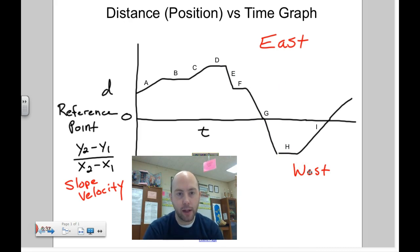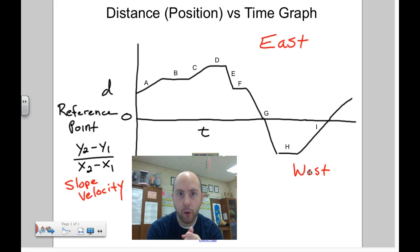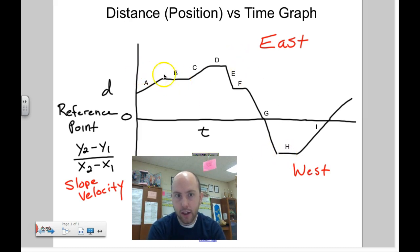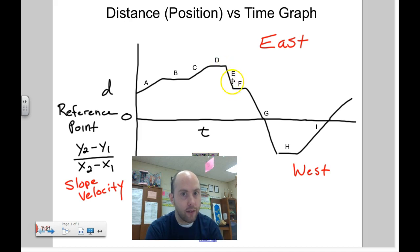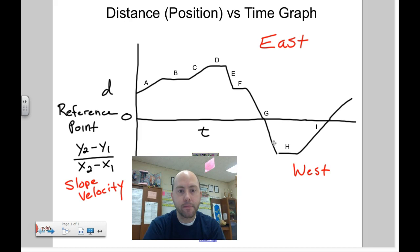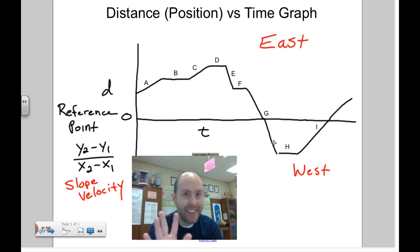On a position versus time graph, here are the big things. One: to calculate slope, you do y2 minus y1 over x2 minus x1, and the slope means velocity. Two: a horizontal flat line — whether in the positive or negative y region — means you're not moving. If a line is going up in the positive y region, you're moving away; going up in the negative y region means you're moving towards the reference point. Going down in the positive y region means moving towards the reference point; down in the negative y region means moving away. I didn't cover any curved lines today, but we'll look at that in another video — this is just the beginning idea of distance versus time graphs.